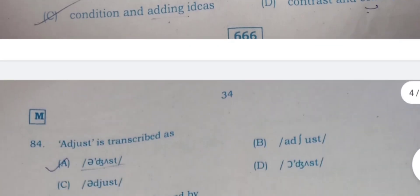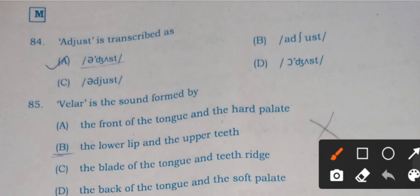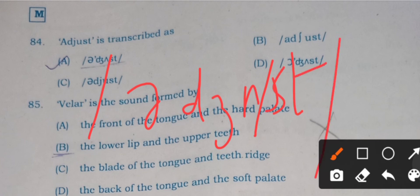Question 84: Adjust is transcribed as - phonetic transcription is given in options A, B, C, and D. The right transcription will be written like this: small schwa, then D-J-U-S-T. Adjust. It will be written like this and stress will be here. A is the right answer.